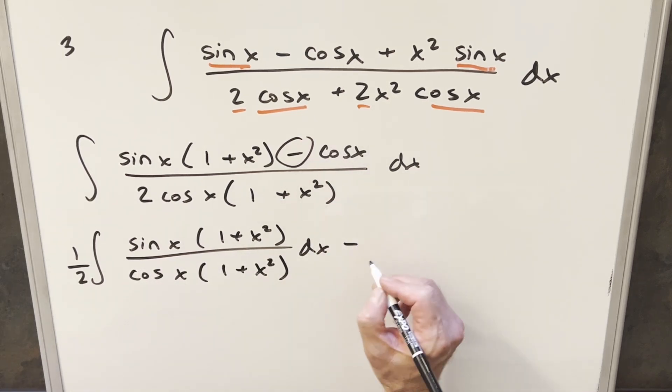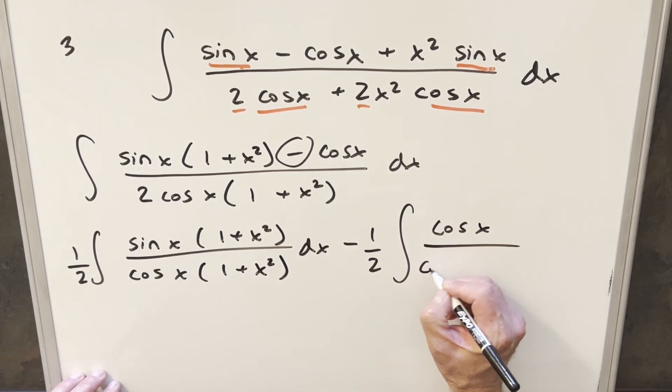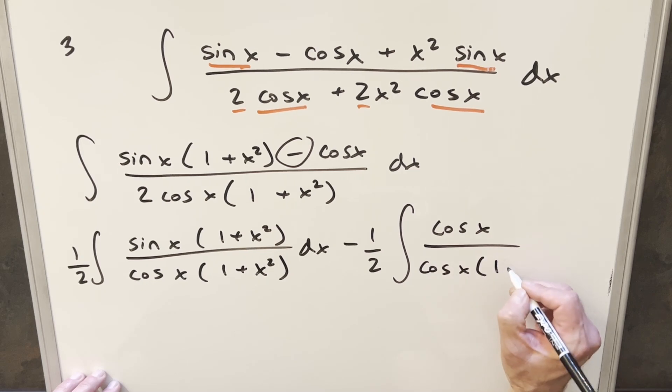And then for the second one, we'll split it on the minus sign. And again, I'm going to bring the 1 half out front. And then here, we're left with cosine x over cosine x, 1 plus x squared.